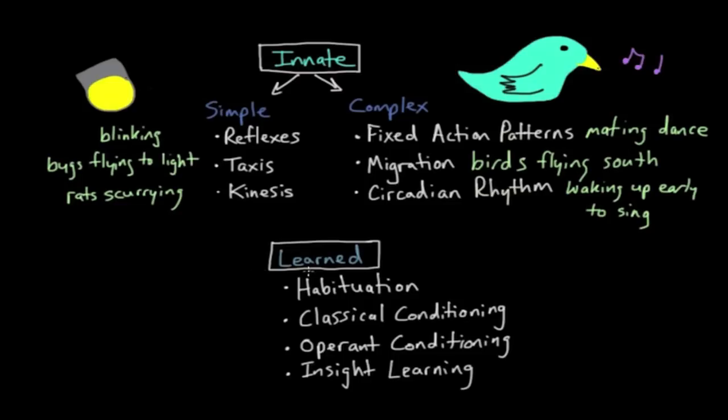A learned behavior is a behavior that's acquired through experience. The most common types of learned behaviors are habituation, classical conditioning, operant conditioning, and insight learning. So to kind of tie together most of these terms, I'm going to draw a little scenario here.